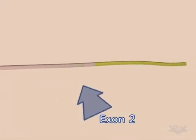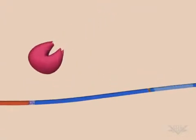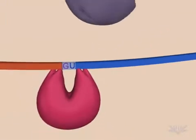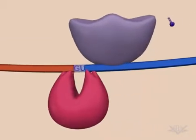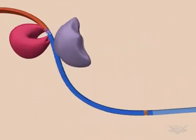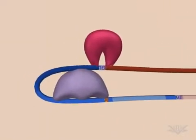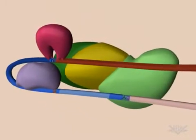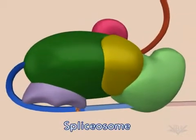The GU and AG sequences define the beginning and end of the intron. Splicing is mediated by the spliceosome, which consists of several protein-RNA complexes. The first step involves two complexes that bind near the GU sequence. The RNA is then looped and three other protein-RNA complexes bind. This final complex then undergoes a conformational change.